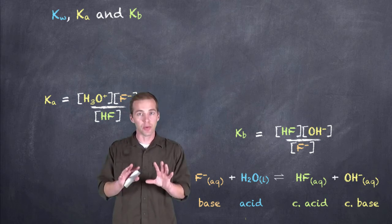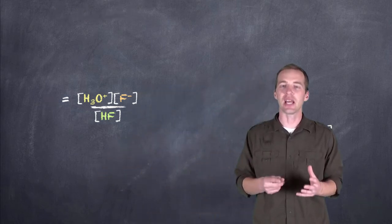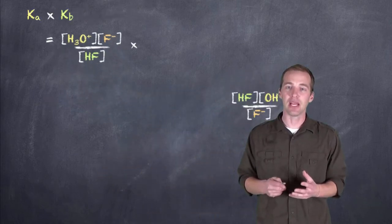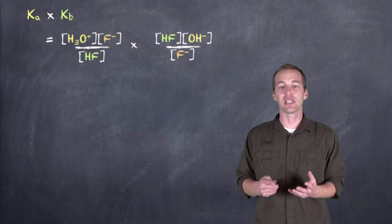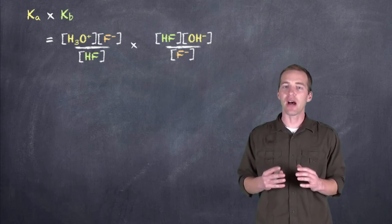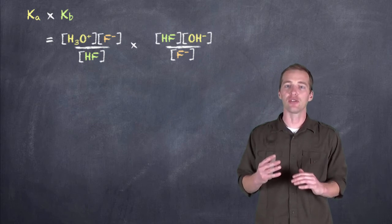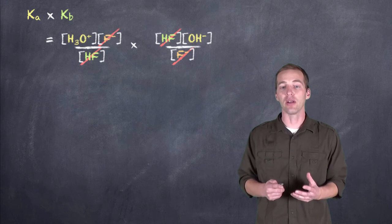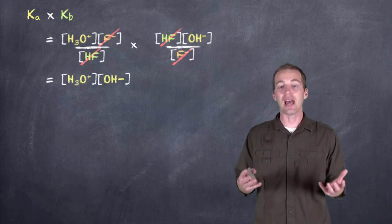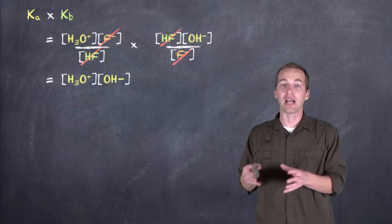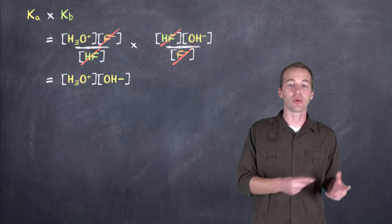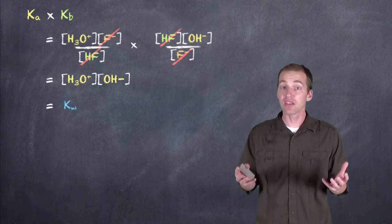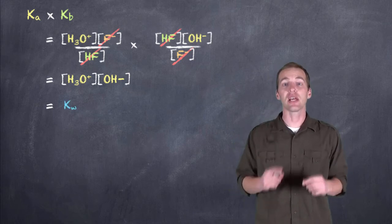Now, and humor me here, let's just say we were to take Ka and multiply it by Kb. And we put these two expressions together in order to do that. What we would notice is that some of the values in the numerator and some of the values in the denominator are going to be the same. That is, they will divide out to one. And if we do that, what we're left with is the concentration of the hydronium ion times the concentration of the hydroxide ion. And what does that look like? Well, that looks like Kw.